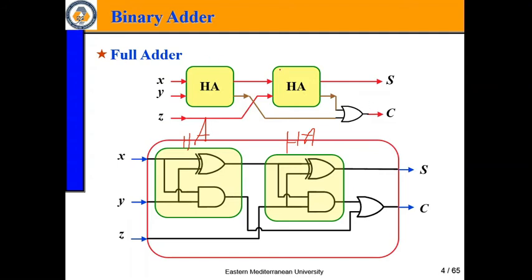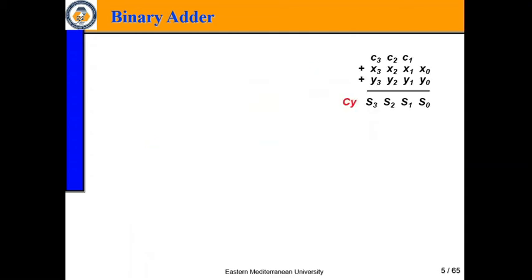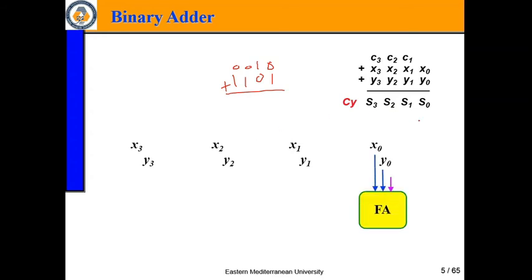By cascading half adders we can make a full adder, and from full adders we can make large additions. We can represent binary numbers like 0 0 1 0 1 1 0 1 and add them using a combination circuit. We can build circuits that handle 2 bits, 3 bits, and up to 4 full adders.